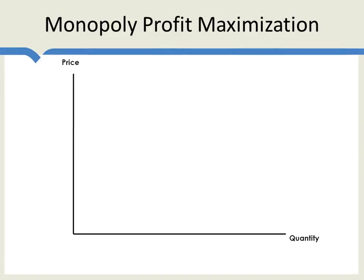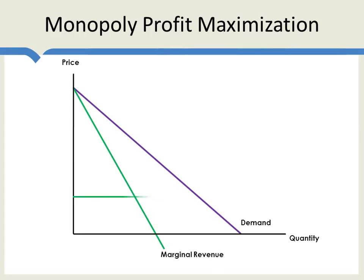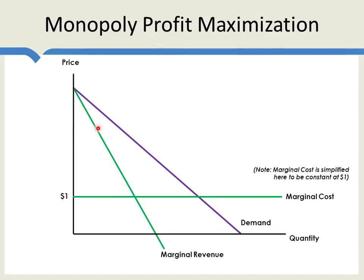Here's the standard monopoly profit maximization story, which you can find in any Principles of Economics textbook — I recommend Modern Principles by Cowen and Tabarrok. Here's the demand curve for the monopolist's product, here's the marginal revenue curve, and here's the marginal cost curve. The marginal revenue curve tells the monopolist what is the addition to revenue from selling one more unit. The marginal cost curve tells the monopolist what is the addition to cost from producing one more unit. The monopolist wants to keep producing so long as marginal revenue exceeds marginal cost — that is, produce until marginal revenue equals marginal cost.